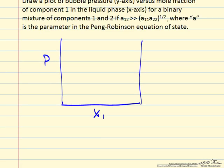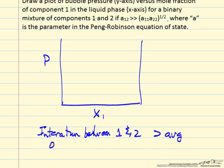Physically, this means that the interactions between 1 and 2 are greater than the average interactions of 1 with 1 and 2 with 2. This means that the pressure above a binary mixture would be lower than the pressure for an ideal system.